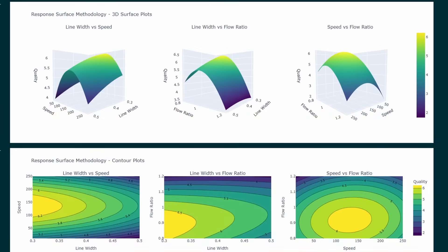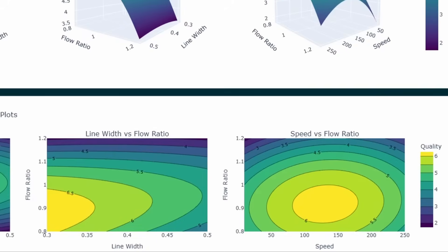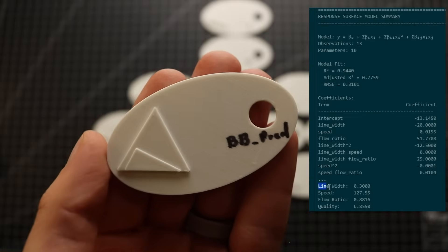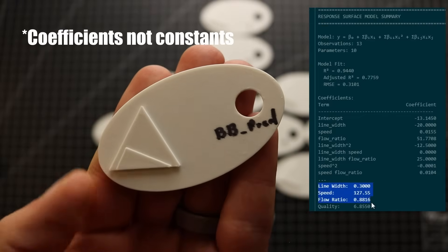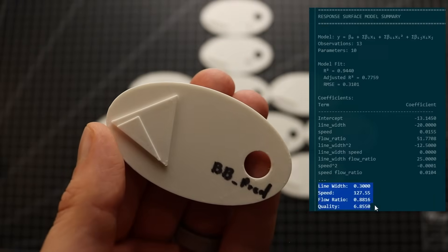This is also backed up by the surface plots of quality. This data would suggest that a piece with a low line width, flow, and moderate speed would do well. In fact, the model with the constants created from this data suggested these parameters, which turned out really great.